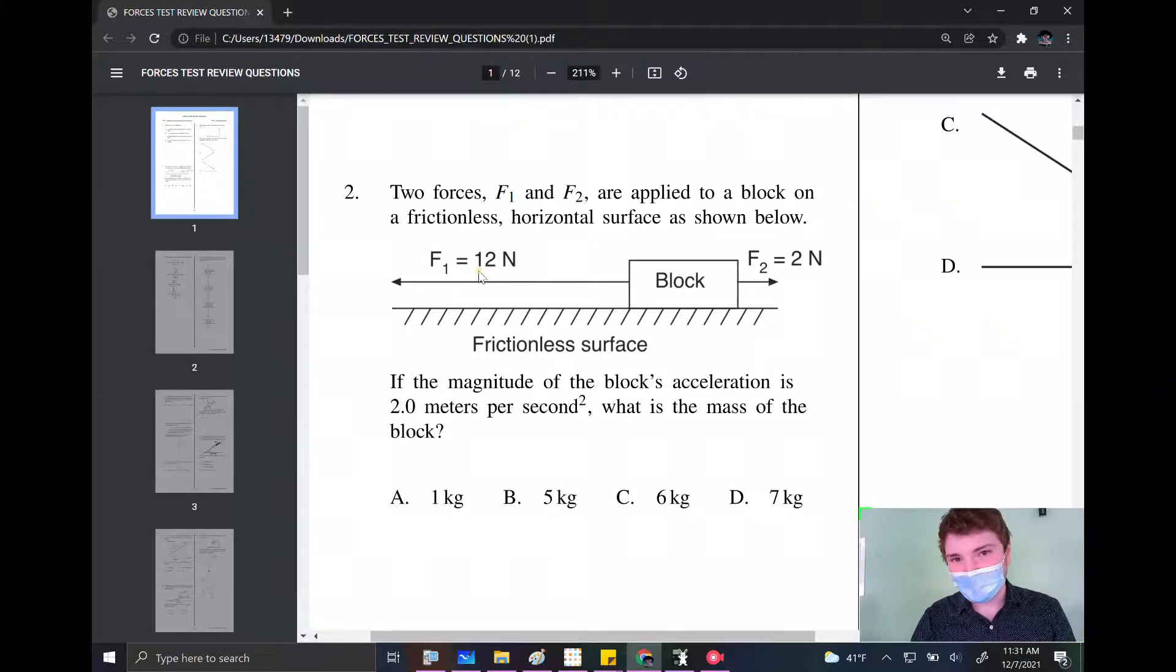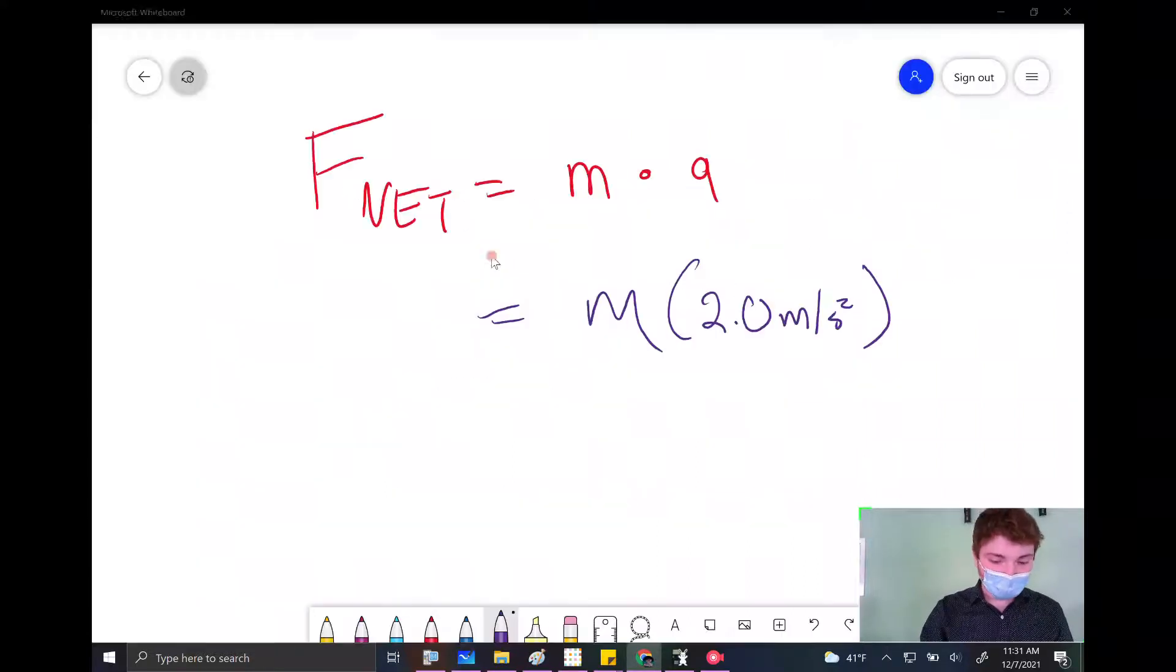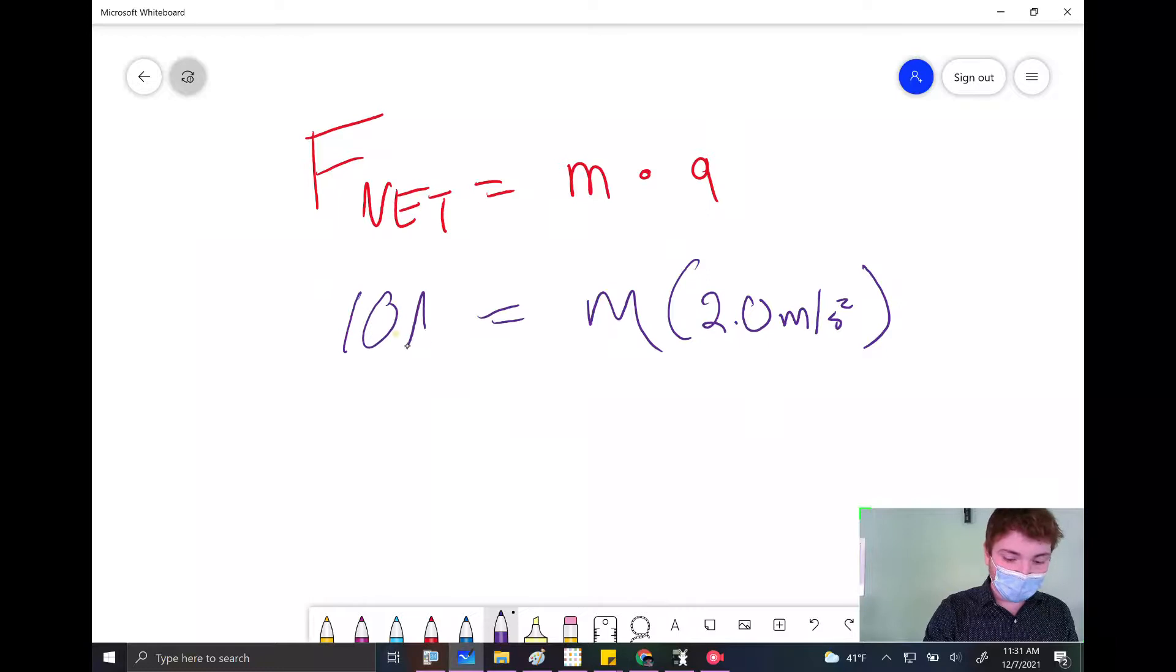So I have 12 going one way, 2 going the other way. And that means I have a total of 10. If they're going opposite directions, they have to be subtracted. So, in total, I have 10 newtons of force. My net force is 10 newtons.